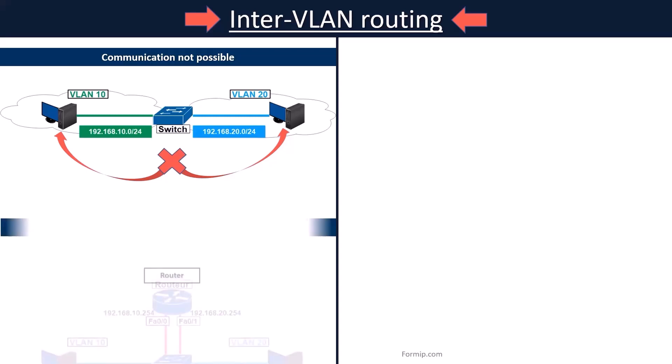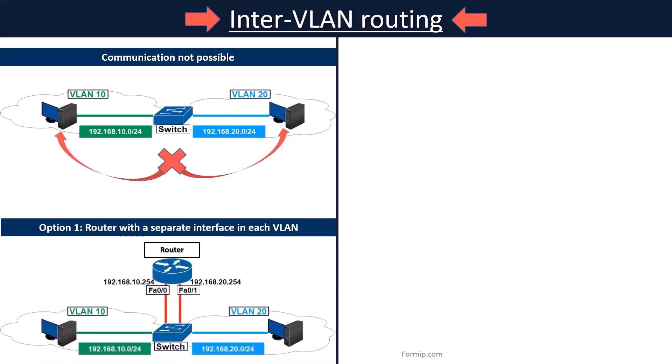There are three different ways to do inter-VLAN routing. For example, you can do this with a router that has a separate interface in each VLAN. This is called traditional inter-VLAN routing. VLANs are associated with IP subnetworks, and this configuration makes routing in a multi-VLAN network easier.